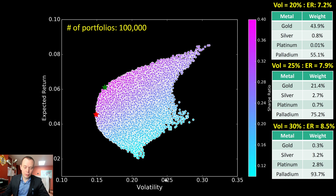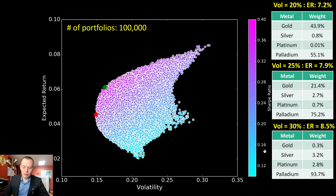If you have a slightly higher risk appetite at 25% volatility, the portfolio that gave the highest expected return was 7.9%, consisting of about 21% gold and 25% palladium — though other portfolios at that level could have had very different weights. Finally, to maximize expected return at a 30% volatility level, the result was essentially 94% palladium with very little in the other assets.